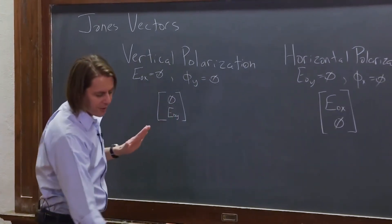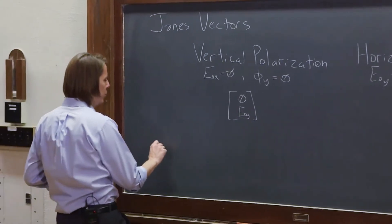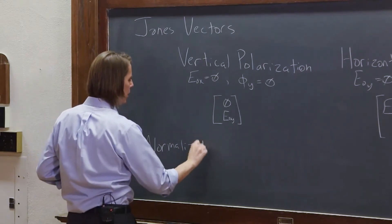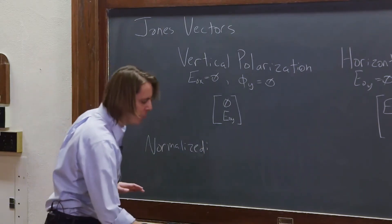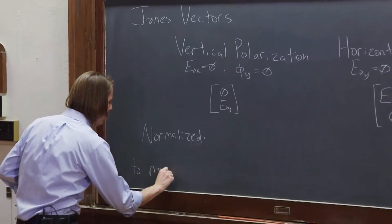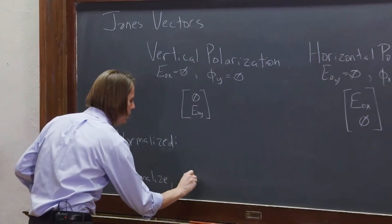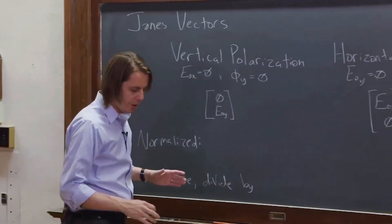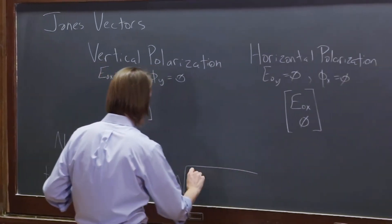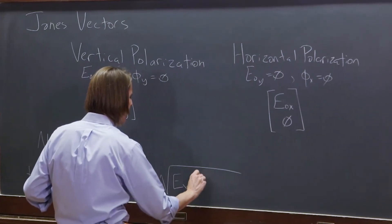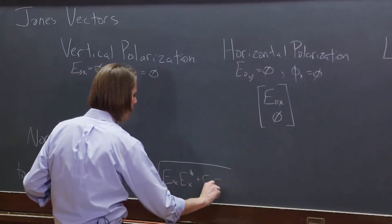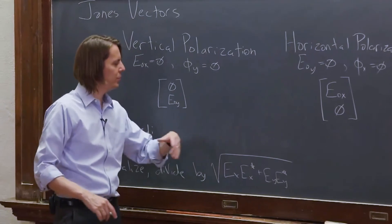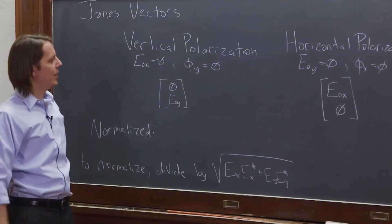So these are Jones vectors, but they're not quite finished. We want to normalize them. We want to write the normalized version of these Jones vectors. And to normalize, you divide by the magnitude of the total vector, which is the square root of E x times E x star plus E y times E y star, and the square root. So each one of these will give you the magnitude of x and y, and then you combine them that way to get the total magnitude.